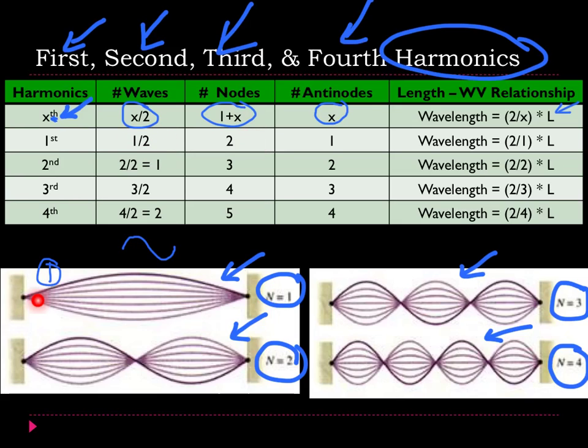We can count the nodes. We have one node here where it's staying still, one here. In total, we'll have two nodes. I can calculate that: x right here plus this 1 will give me two nodes. Antinodes is exactly the same as x. Since x is 1, I'll have one antinode. We can see we only have one part of this harmonic moving up and down.